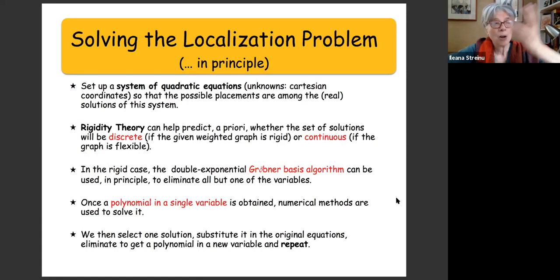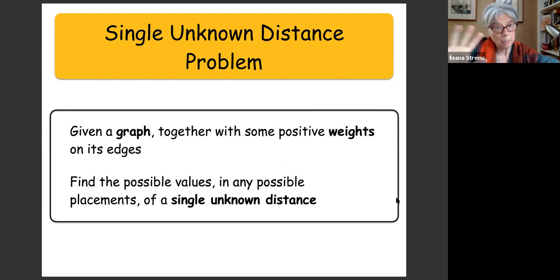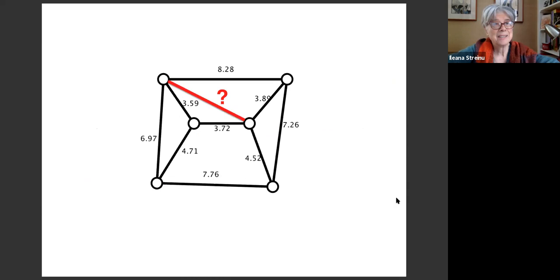Let me talk about the slightly simpler 'single unknown distance problem.' We are given a graph with positive weights on edges, and we want to find all possible values of a single unknown distance. The given graph with edge weights is a Laman graph, and we ask: what are the possible values for this unknown length? If we can solve this problem, we can solve the localization problem by constructing a trilateration.